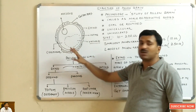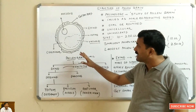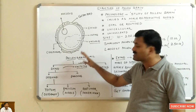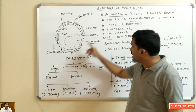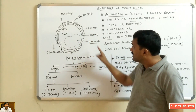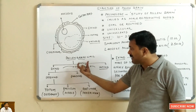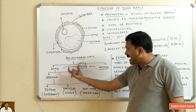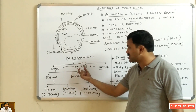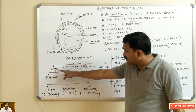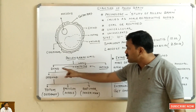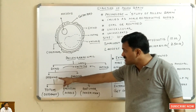In the structure of the pollen grain, you can see from outside that there are two walls surrounding it. The outermost one is known as the exine and the inner one is known as the intine. The term exine and intine was first given by a scientist named Fritsch. The exine is a very thick layer while the intine is a thin layer.